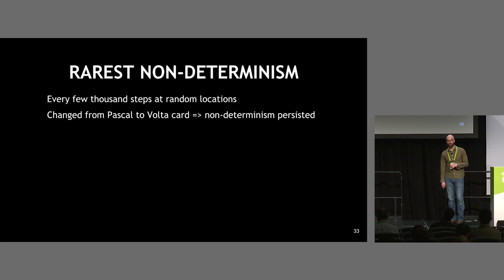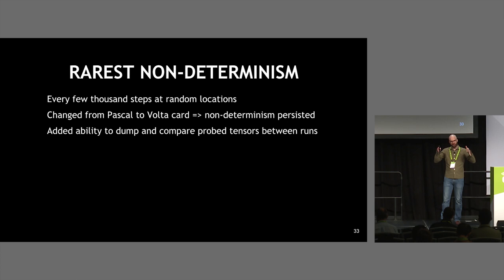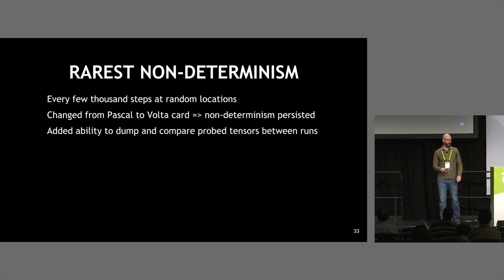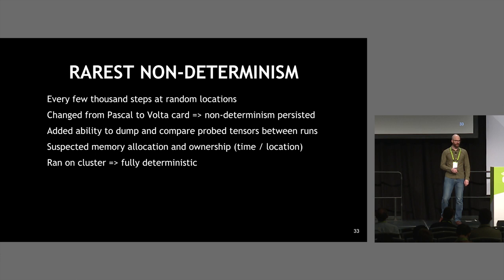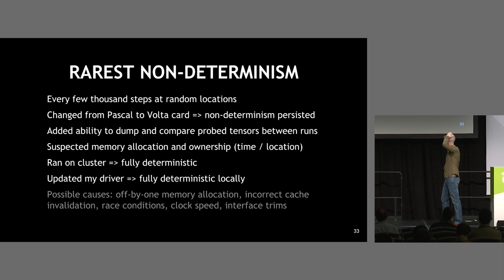At this point, non-determinism was appearing every few thousand steps at random locations in the input pipeline — places where the op itself couldn't be the cause. I thought I had a hardware issue and changed from a Pascal to a Volta card, but the same non-determinism persisted. After dumping probe tensor contents to files, I found completely random number insertions in particular columns — not floating point rounding anymore, more like a bug. I ran it on the cluster and it ran completely deterministically. The only real difference was the driver. I updated to the most recent drivers on my local machine and it was fully deterministic.